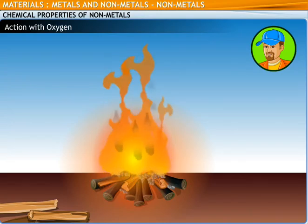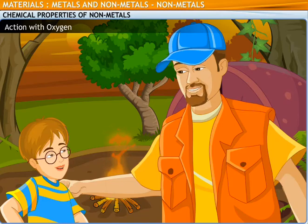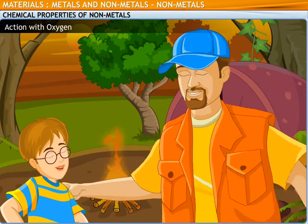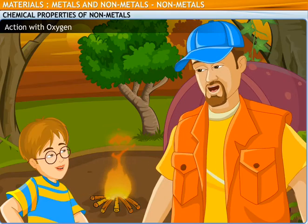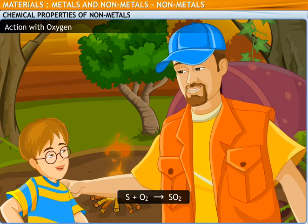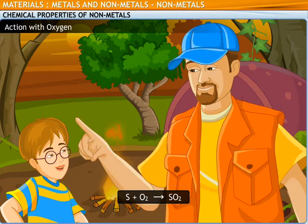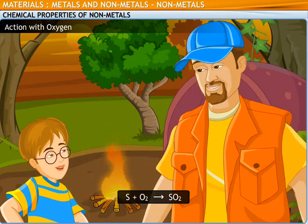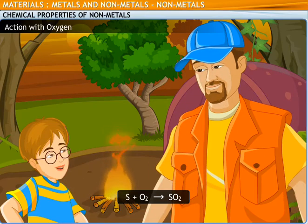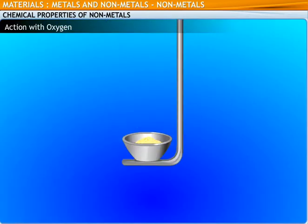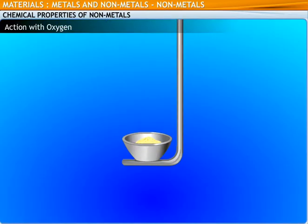When you make a bonfire, the wood burns to release smoke. Non-metals react with oxygen and form acidic or neutral oxides. For example, sulfur reacts with oxygen to form sulfur dioxide, which is acidic. Let's perform an experiment to understand this chemical property. Take a small amount of sulfur in a deflagrating spoon and heat it.